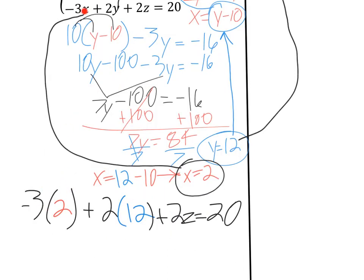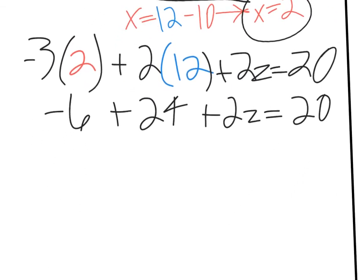Okay. So I plugged in everything off camera. Instead of negative 3x, I have negative 3 times 2 because x was 2. Plus 2y becomes plus 2 times 12 because y was 12. And then bring down the plus 2z equals 20. Okay. So now just do the math. Negative 3 times 2 is negative 6. Plus 2 times 12 is 24. Bring down the plus 2z equals 20. All right. And so we'll combine like terms. My like terms here are the negative 6 and 24. That would make 18. Bring down the plus 2z equals 20.